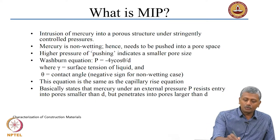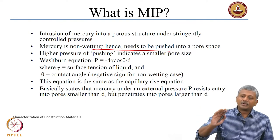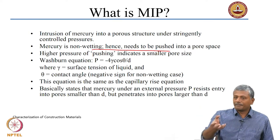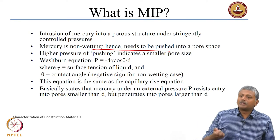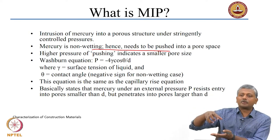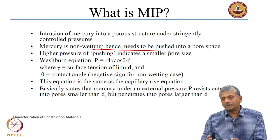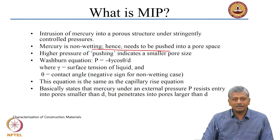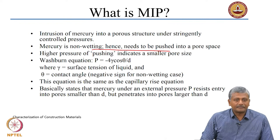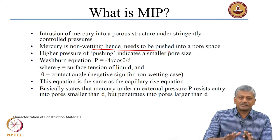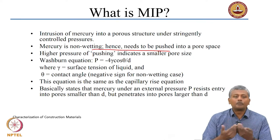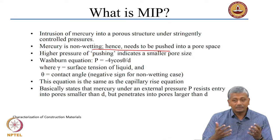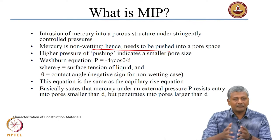The intrusion of mercury into a porous structure under stringently controlled pressures is mercury intrusion porosimetry. If you use water, it would be directly absorbed by the pores, but mercury will not enter even if you place a block of concrete on it — it needs to be pushed under pressure. A valid question is whether the mercury pressure might open the pores, and that will be addressed later.